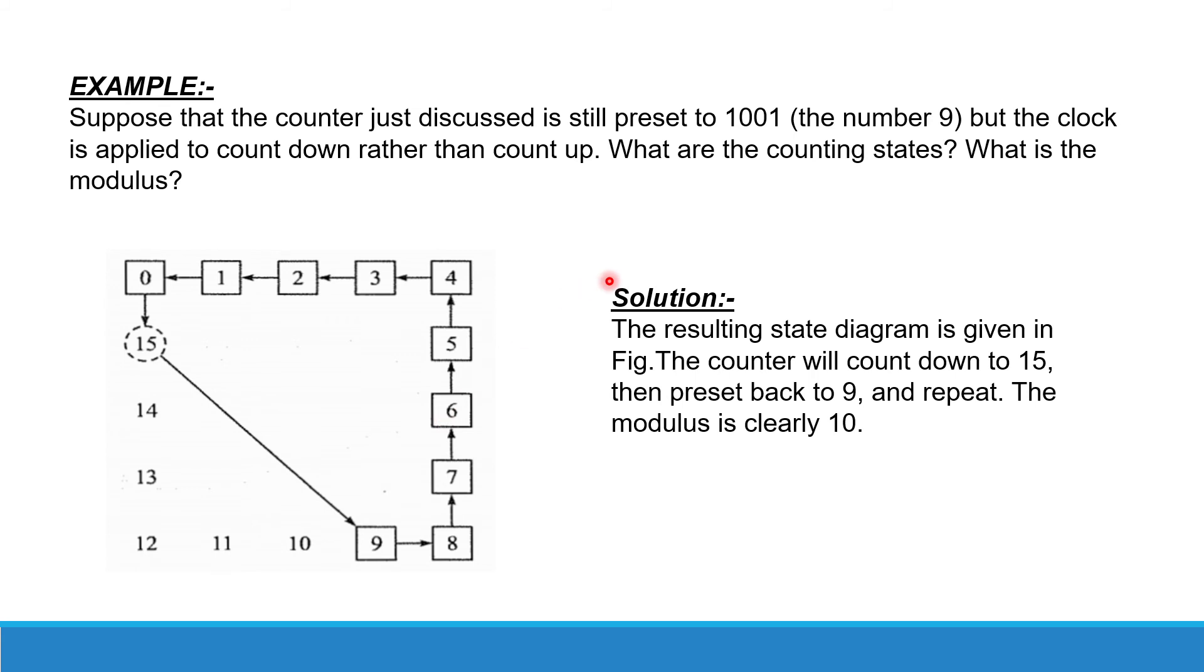Now, we move towards the example for clarity. Suppose that the counter just discussed is still preset to 1001, but the clock is applied to count down rather than count up. Now, the question is what are the counting states?